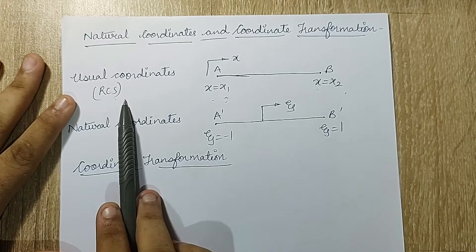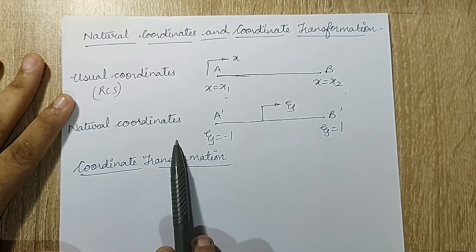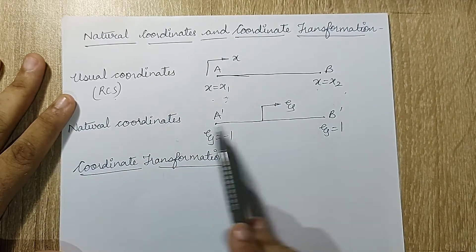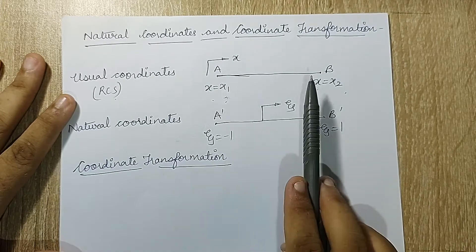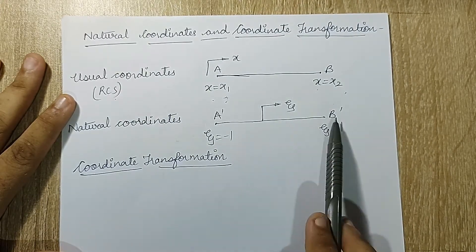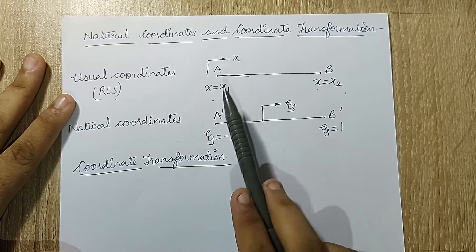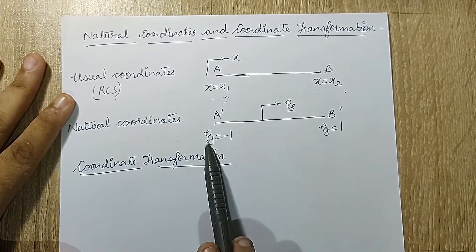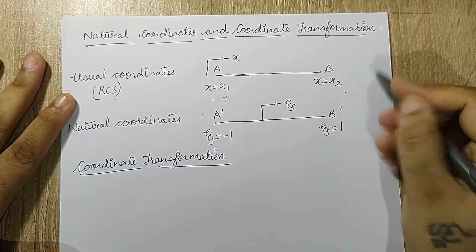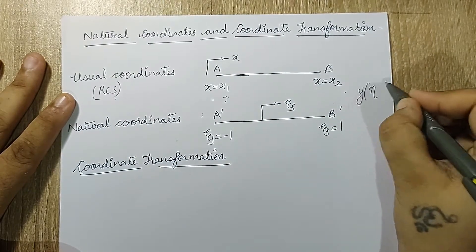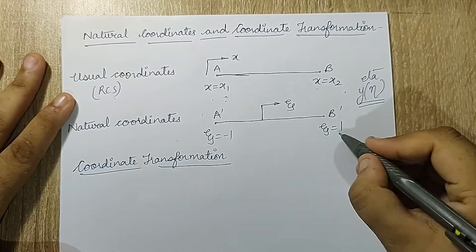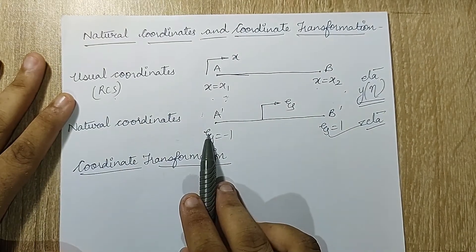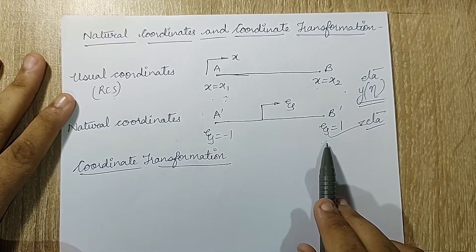When you talk about the natural coordinate system, it is very simple — not as complicated as the rectangular coordinate system — because in the natural coordinate system you only use three numbers: 0, 1, and -1. This is the same node A and B, marked as A-dash and B-dash. Here I have taken zeta (ζ) for the x-axis, and for the y-axis I will use eta (η). One end is ζ = -1 and the other end is ζ = +1.